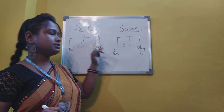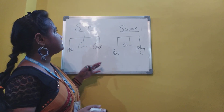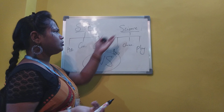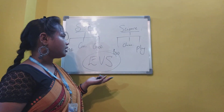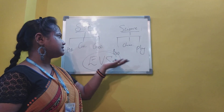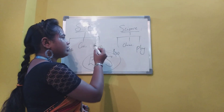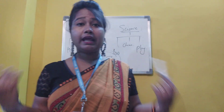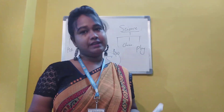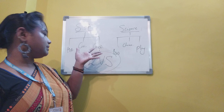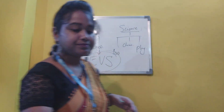Social studies includes history, civics — which we also call political science — and geography. We consider EBS as part of almost both sides, but more or less as part of science, though it is somehow connected with geography also, because you get to study about your environment.